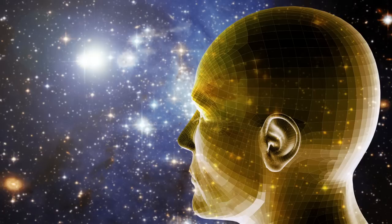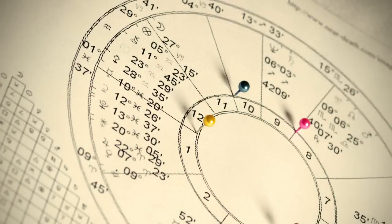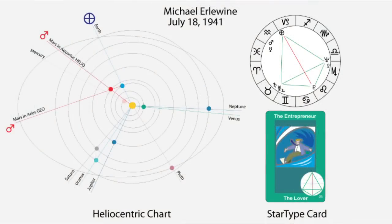Star Types Astrology is both ancient and modern. It's ancient because it uses the traditional astrology natal chart, the same one that astrologers have used throughout history. But it's also modern because it takes advantage of what astronomers have learned about the heavens and our solar system up into these modern times.